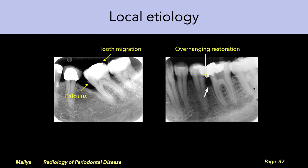In addition to evaluating the periodontal bone, also identify local etiological factors that may be causative in nature. These include areas of calculus, migrated teeth, and overhanging restorations.